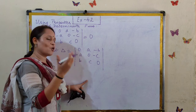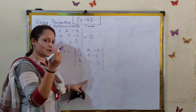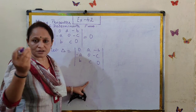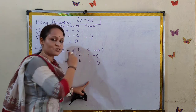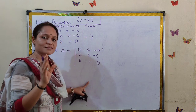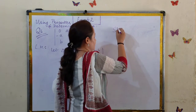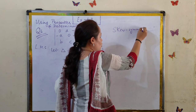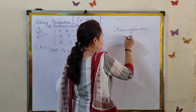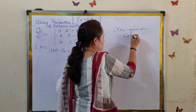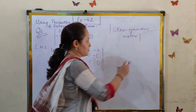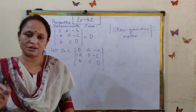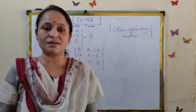This reminds you of one of the matrices you have studied in chapter 3. These are the entries of a skew-symmetric matrix. After doing this question, we are going to get a very important result about the determinant of a skew-symmetric matrix.